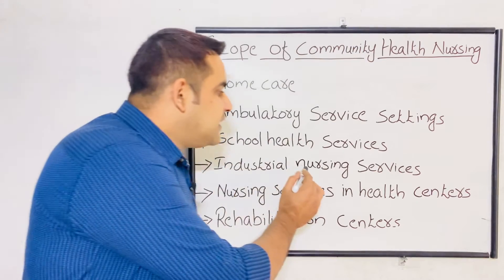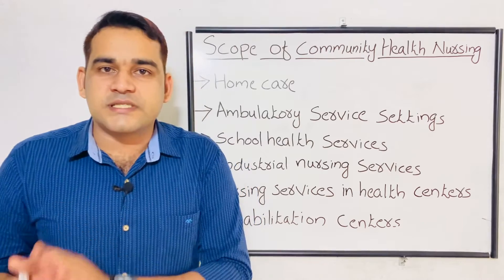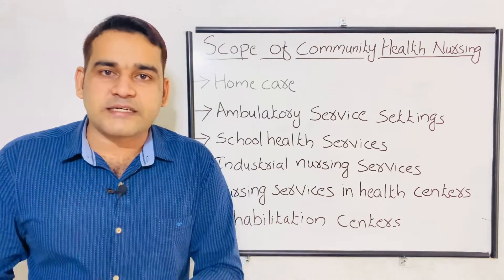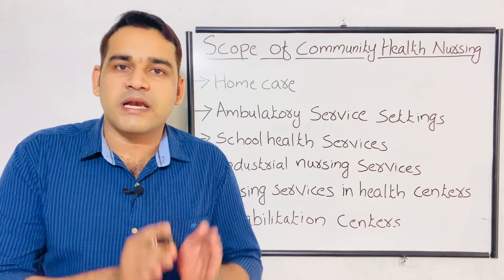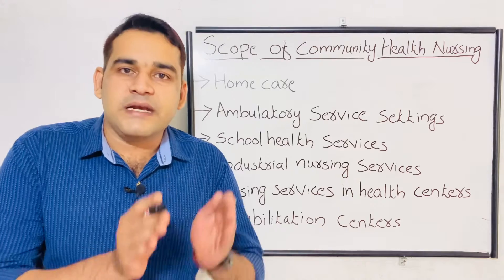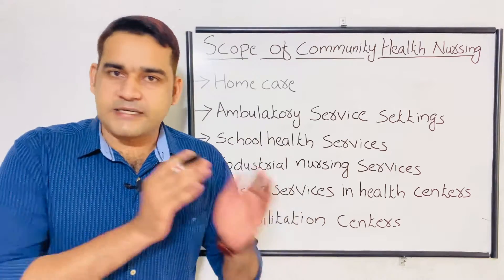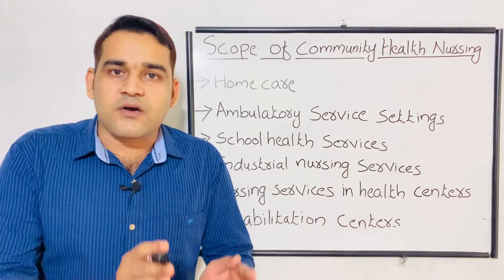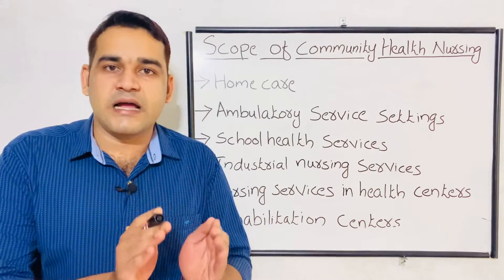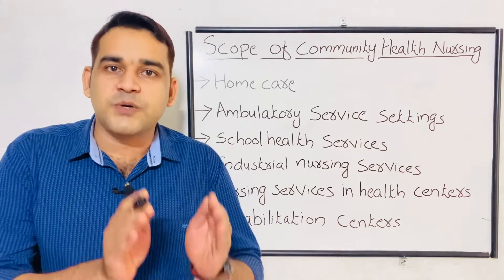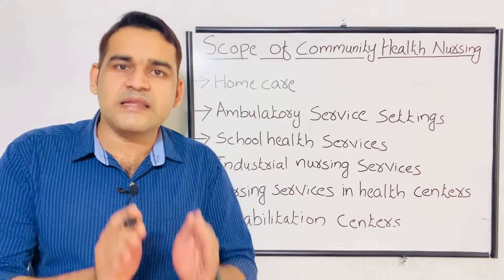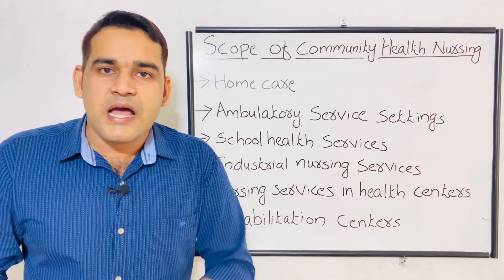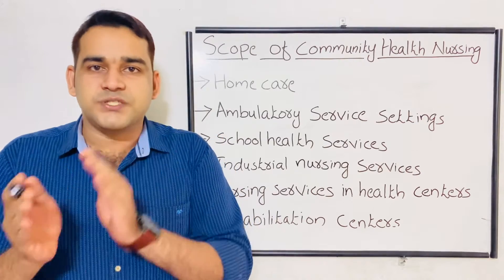The next scope is industrial nursing services, related to occupational nursing in the industry, factory, or job setting. Community people work in different areas, and there is a chance of getting different diseases from industry and factories — including exposure to radiation, chemicals, and microorganisms. In the occupational or industrial setting, the nurse should provide health education, maintain health records, provide psychological support, and educate workers about the importance of wearing masks, gloves, and safety shoes.